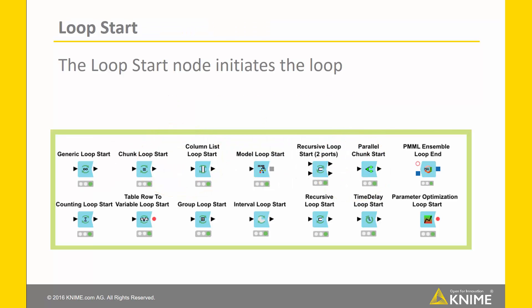Here you see a list of different loop start nodes. The loop start node initiates the loop. One example is the chunk loop start node. The chunk loop start node sends out a subset of your data in each iteration.